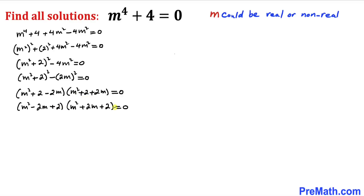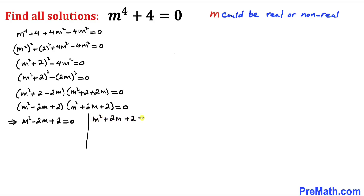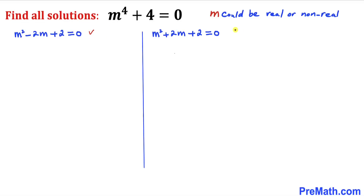Let's write these two polynomials in descending order. We now have two factors equal to zero. Separating them: the first factor gives m² - 2m + 2 = 0, and the other factor is m² + 2m + 2 = 0.